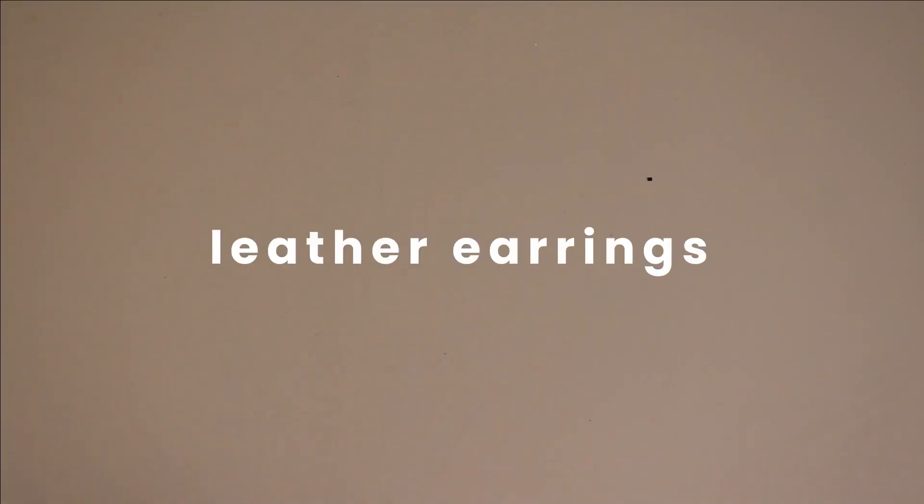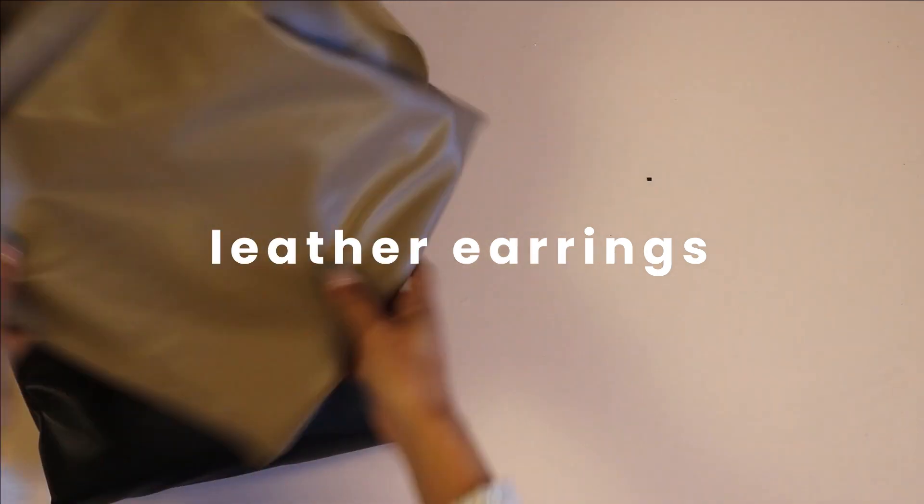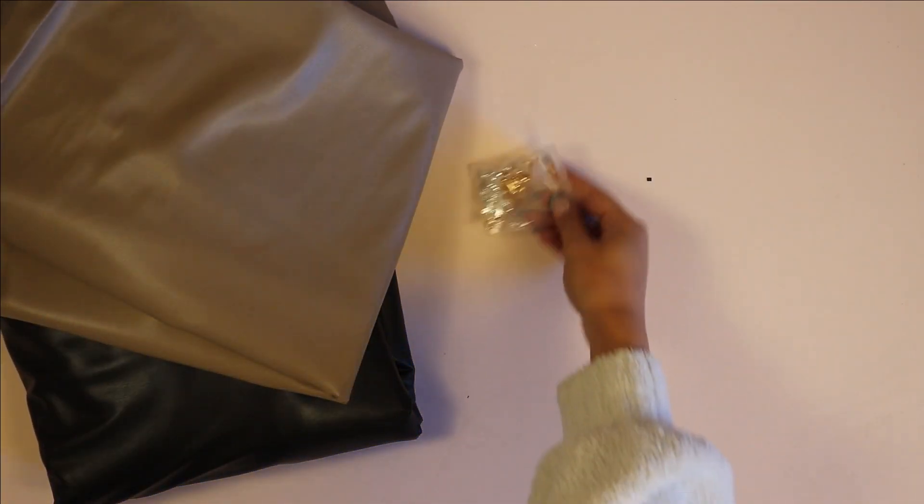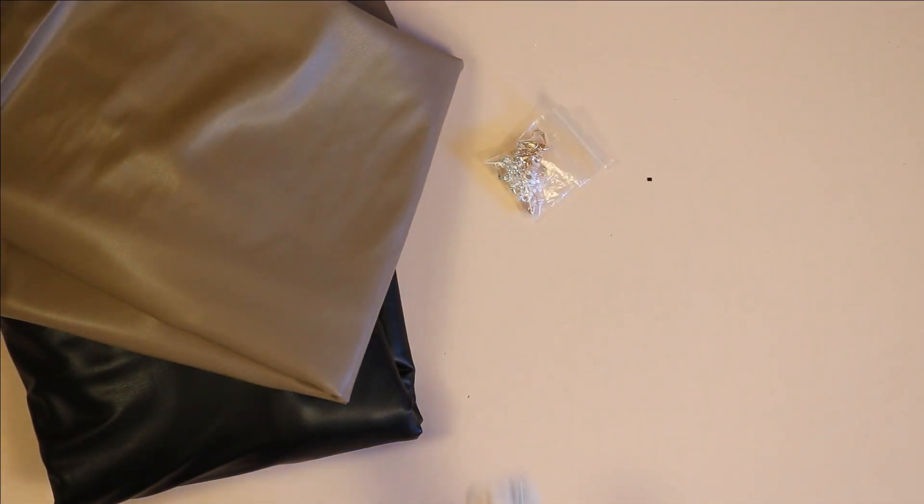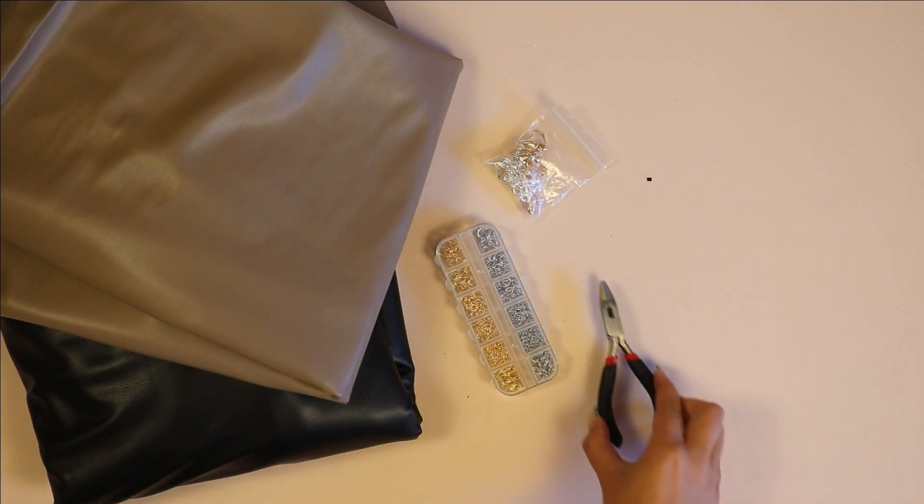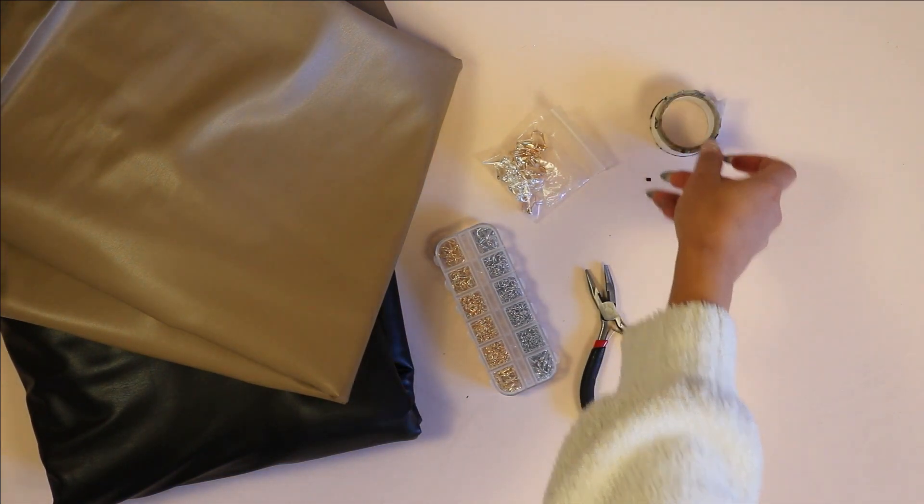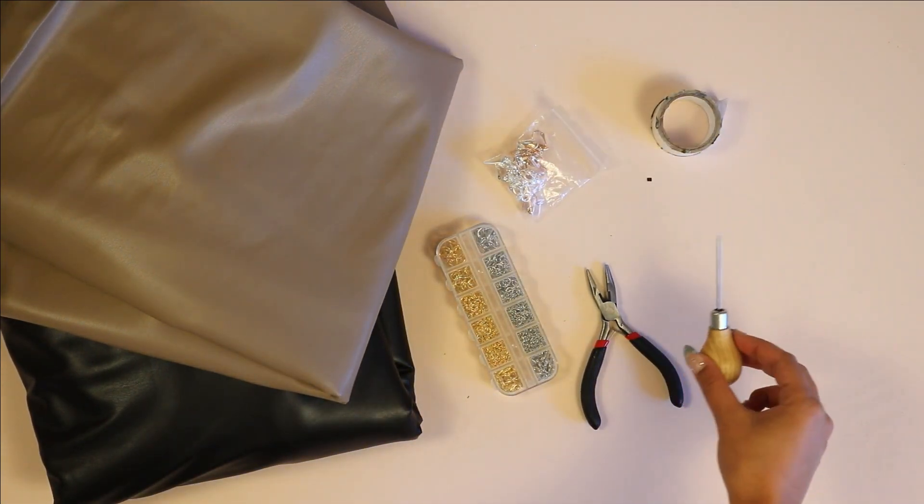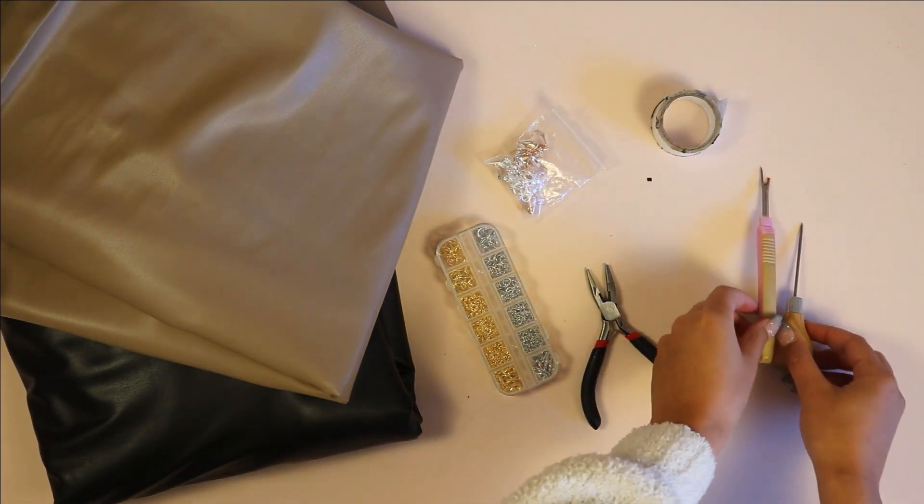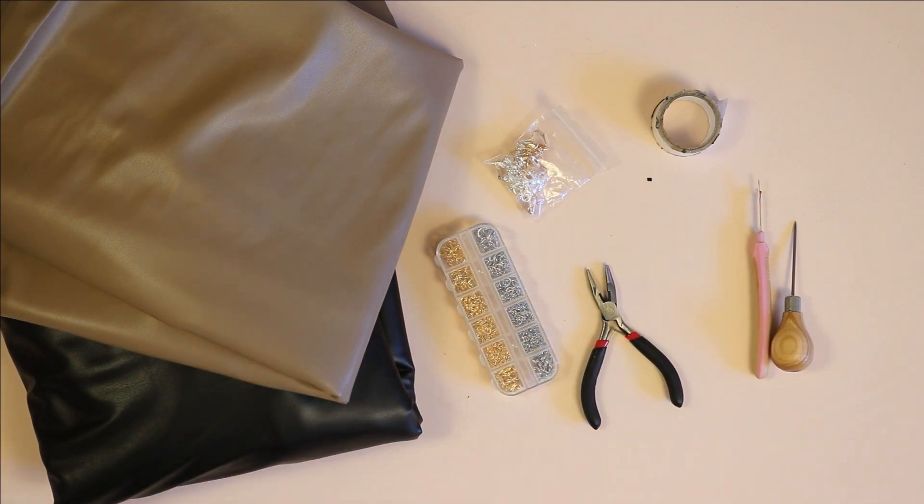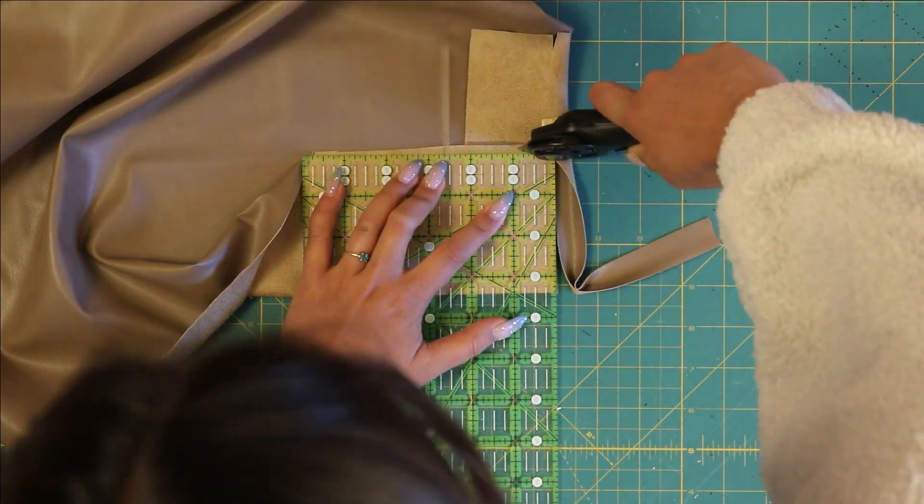Moving on to some leather earrings. I've made so many pairs of faux leather earrings throughout the years, so I wanted to show you guys how I do that. You're going to need faux leather, earring backs, jump rings, needle nose pliers for the jump rings, double-sided tape, and then finally either an awl to make holes for the jump rings or a seam ripper. I've also used tweezers—whatever you have on hand.